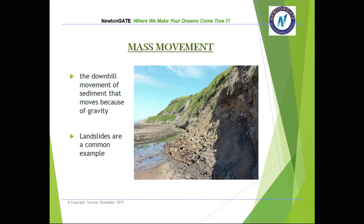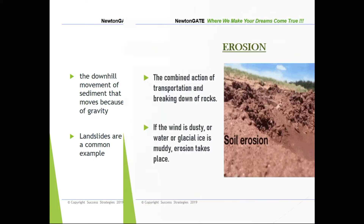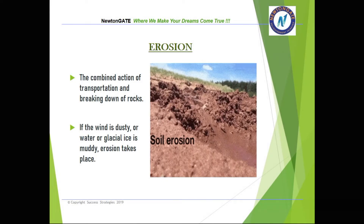Mass movement is the downhill movement of sediment that moves because of gravity. A common example of mass movement is landslides. Erosion means the combined action of transportation and breaking down of rocks. If the wind is dusty or water or glacial ice is muddy, erosion takes place.